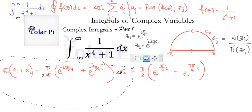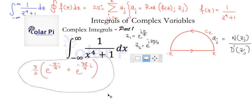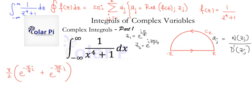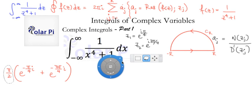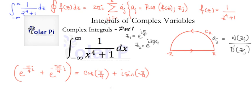Now we work on what's inside the parentheses, keeping mental note that we'll multiply by π/2. Using e^(iθ) = cos(θ) + i·sin(θ), we expand: e^(−iπ/4) = cos(−π/4) + i·sin(−π/4). Cosine of negative π/4 is just cos(π/4) since cosine is even. And i·sin(−π/4) equals −i·sin(π/4) since sine is odd.